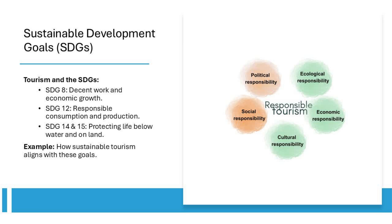Case Study — Costa Rica: A Leader in Sustainable Tourism. Costa Rica exemplifies how sustainable tourism can advance multiple SDGs. The country has developed a model that balances economic growth with environmental preservation and social equity. For SDG 8, Costa Rica generates significant income from ecotourism, accounting for nearly 10% of its GDP, while supporting thousands of jobs in rural communities. For SDG 15, with over 25% of its land designated as protected areas, Costa Rica uses tourism revenues to fund conservation projects such as reforestation and wildlife protection.